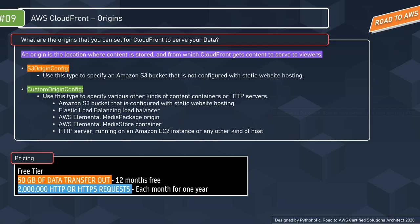An origin is the location where your content is stored and from which CloudFront gets content to serve to viewers. You essentially tell CloudFront where the content is, and it makes it available to users. There are different types of origin configurations you can specify.